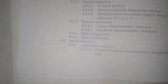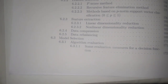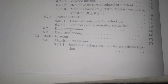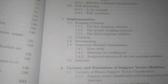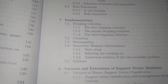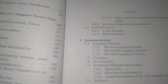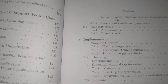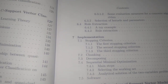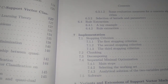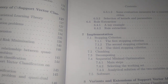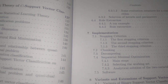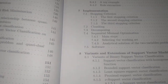Additional topics in Chapter 6 include data compression, data rebalancing, bundle selection algorithms, evaluation measures for decision functions, evaluation measures for concrete algorithms, selection of kernels and parameters, rule extraction, a toy example, and finally rule extraction.